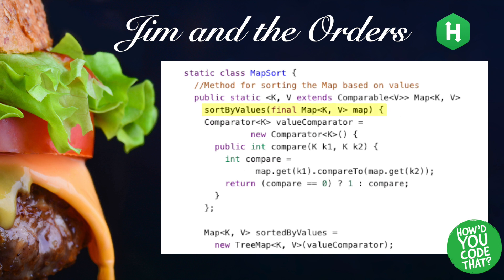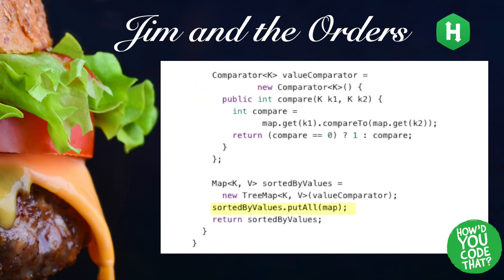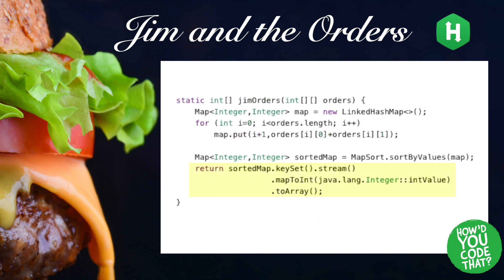Inside the sortByValues method on the map sort object, a comparator named valueComparator is defined, with a compare method that compares the keys of 2 objects — in our case, the customer numbers. Next, a new TreeMap named sortedByValues is instantiated, using the constructor that accepts a comparator, passing it our comparator. Next, the elements from our map are put into the sortedByValues TreeMap, which sorts all elements by value automatically. Next, the sortedByValues map is returned to the caller.